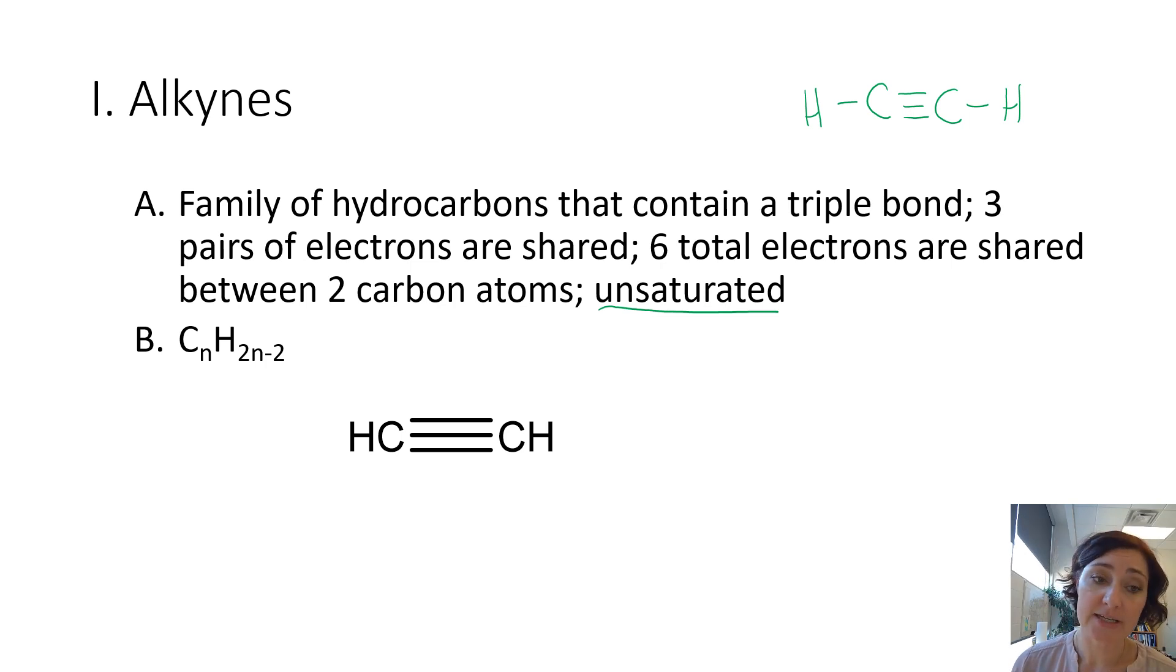Our general formula for this is CnH2n-2. So in this case, we had two carbons and two times two is four minus two is two. So we started with the alkane and we'll remove these two hydrogens and those are going to form a double bond. We're also going to remove a second set of hydrogens, freeing up those electrons to share in a triple bond. So when we remove those hydrogens, that's what allows us to have that double and triple bond.